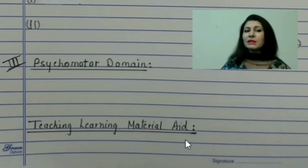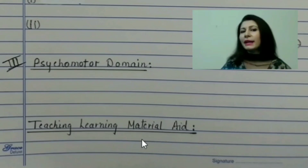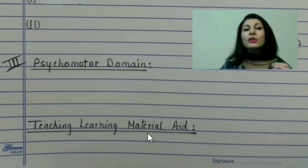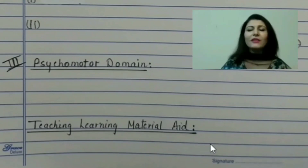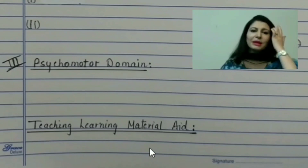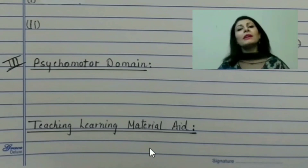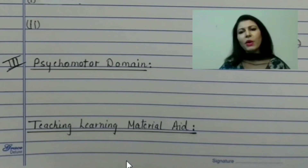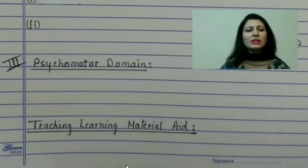After writing the specific objectives, the third heading would be teaching learning material, that is TLM or material aid. Here you will mention what chart, model, flashcards, map or timeline you will use to teach the lesson. For example, a timeline depicting the early life of Akbar, or a map or chart showing the early life of Akbar, or the coins of that particular time.